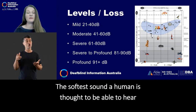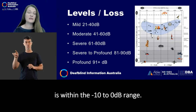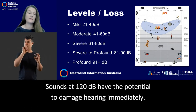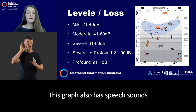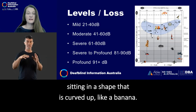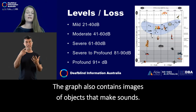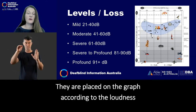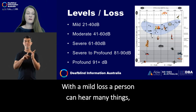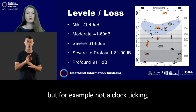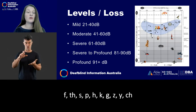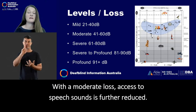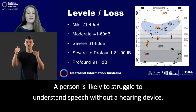The softest sound a human is thought to be able to hear is within the minus 10 to 0 decibel range. Sounds at 120 decibels have the potential to damage hearing immediately. Prolonged exposure at 70 decibels has the potential to damage hearing. This graph also has speech sounds scattered across the top third of the graph sitting in a shape curved up like a banana. With a mild loss, a person can hear many things, but not for example a clock ticking, leaves rustling, or some speech sounds like f, s, p, h, k, g, z, y, ch. With a moderate loss, access to speech sounds is further reduced. A person is likely to struggle to understand speech without a hearing device, especially when there are other sounds in the background. A person with a severe loss will hear machinery and vehicles with big engines. They may or may not hear a dog bark, piano playing, or telephone ringing. They hear little or no speech sounds. With a profound loss, a person is likely to hear a helicopter and chainsaw, especially if those things can be seen. They cannot hear speech.